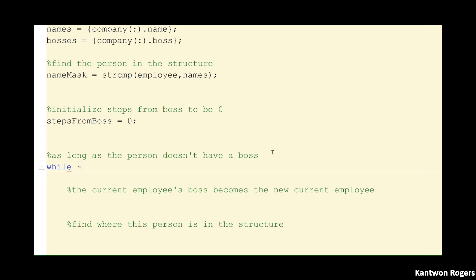So I'm going to say while is not empty, the boss field of my structure at that certain employee's index. So I can say while not is empty, my company at my name mask, oh, I spelled company wrong, company at my name mask dot boss.